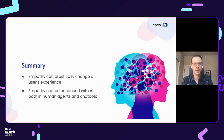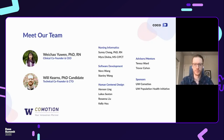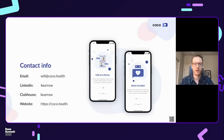In summary, empathy can drastically change a user's experience with the system, and empathy can be enhanced with AI in both human agents and chatbots. This is all possible through an extraordinary team of researchers and students at the University of Washington, and I'd like to thank all of them as well as our advisors and sponsors. My contact info and the URL for Coco are available here — my primary method of interaction is through LinkedIn, so I've included my username as well as a direct link to my profile through the QR code.